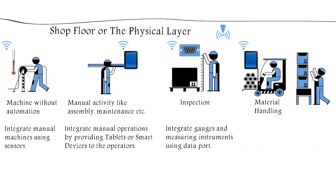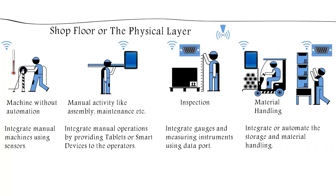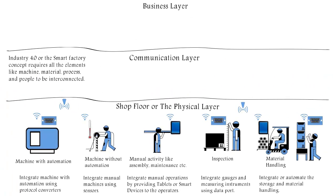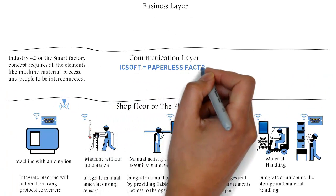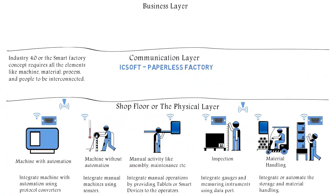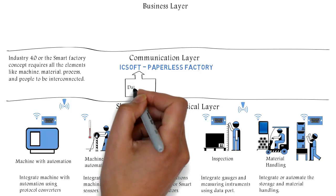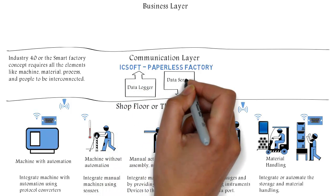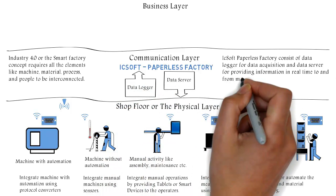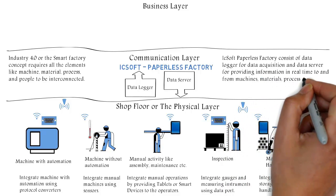InTouch also integrates and automates storage and material handling. ICSoft Paperless Factory — the communication layer software — consists of a data logger for data acquisition and a data server for providing information in real time to and from machines, material, process and people.